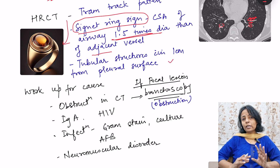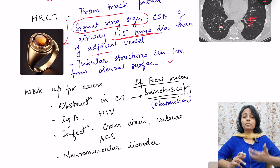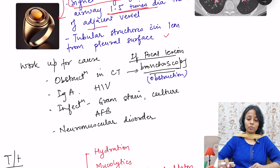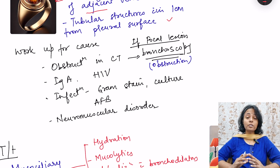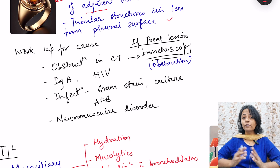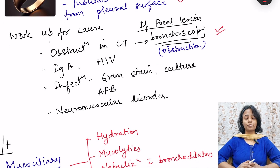Once bronchiectasis is diagnosed, we must do a workup to find the underlying cause. If it is focal bronchiectasis, obstruction is the likely cause, and bronchoscopy is mandatory to look for the presence of obstruction.